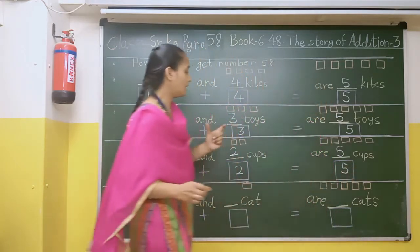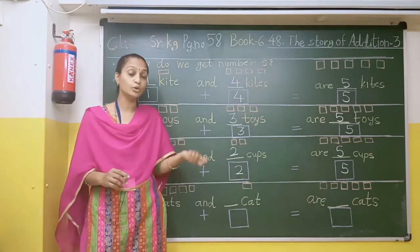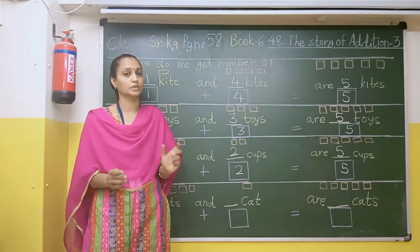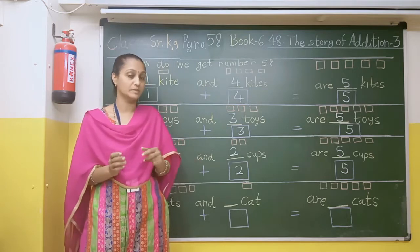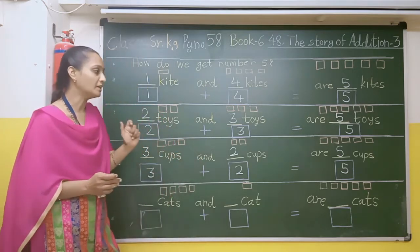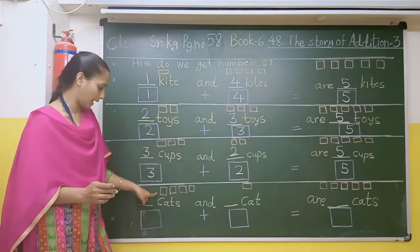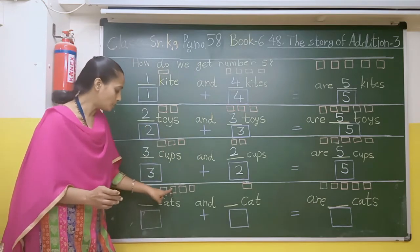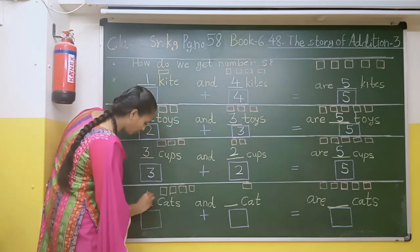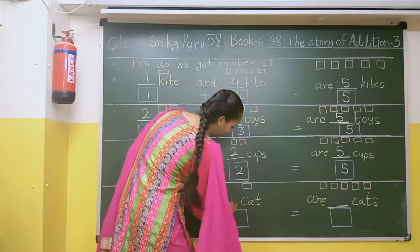So if you have 3 kites and all those kites together, totally there will be 5 kites. This is another way where we can get number 5. Here there is an image of kites: 1, 2, 3, 4. So here we will write number 4. Here there is 1 kite.